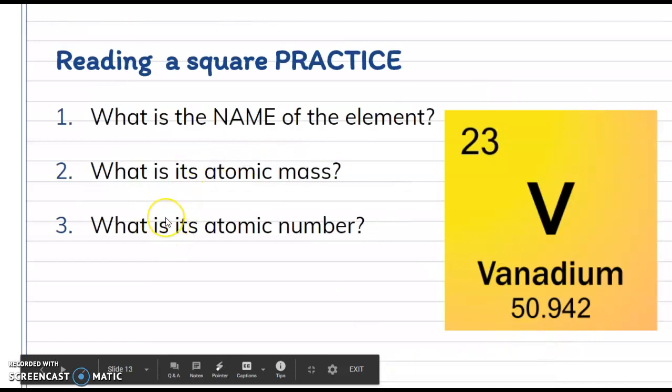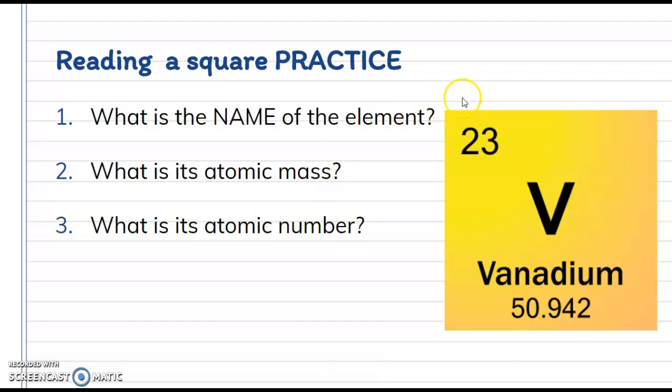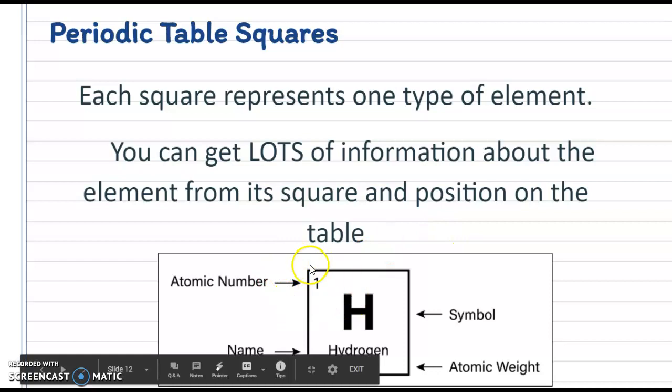And then what is its atomic number? Twenty-three, yep, up in the corner. So once again, that atomic number is up in that corner and the atomic weight or mass is down at the bottom.